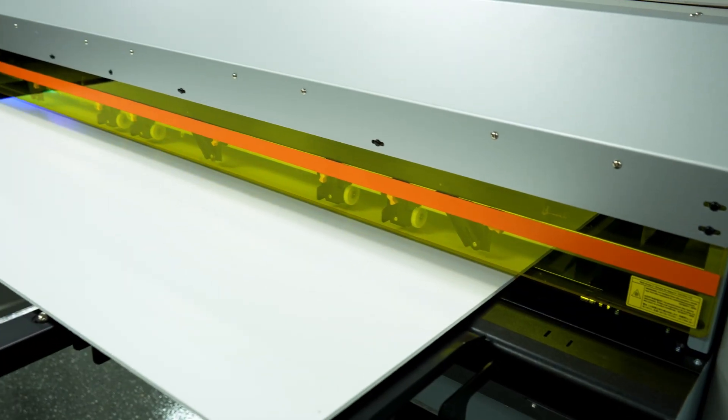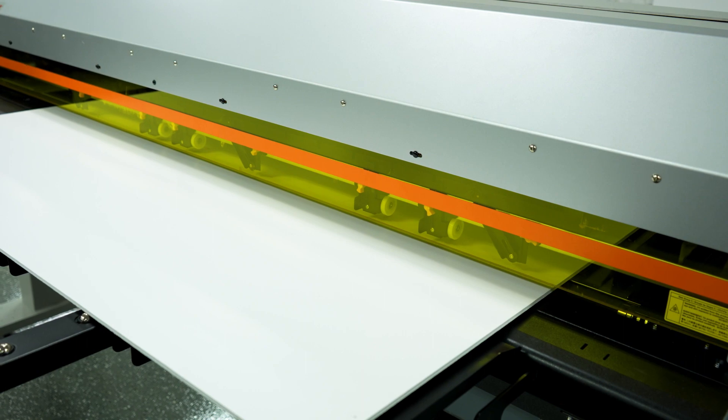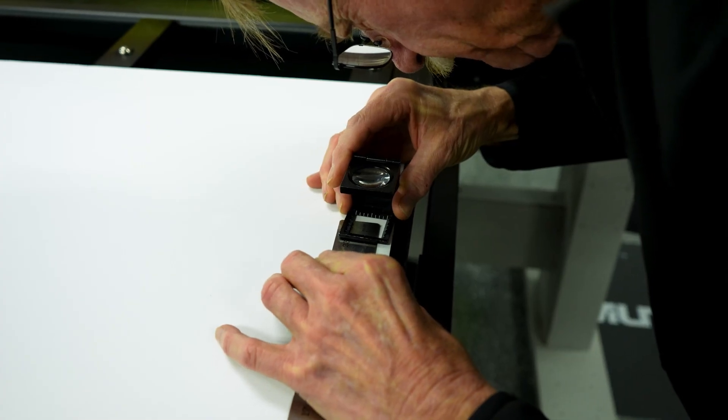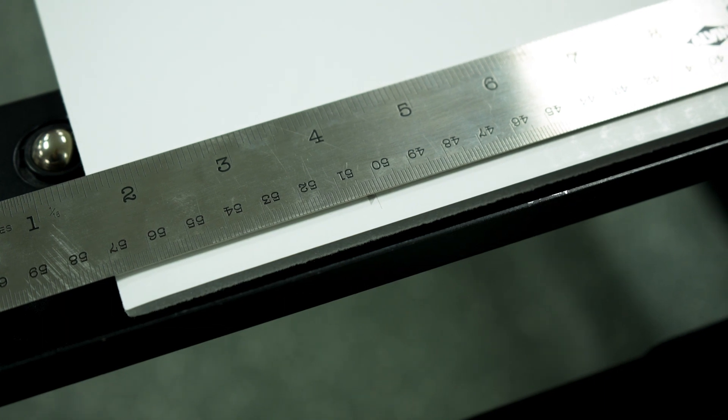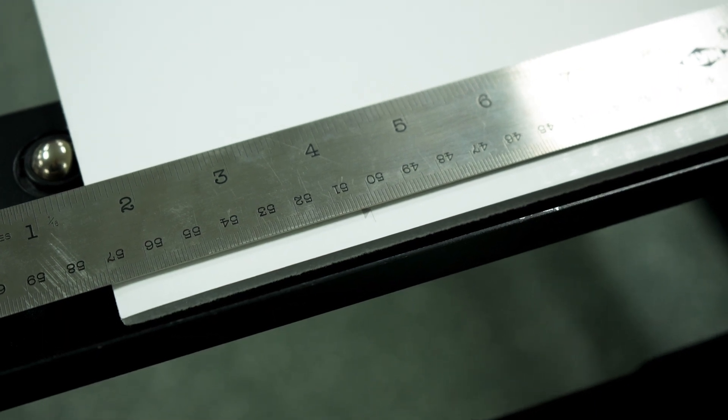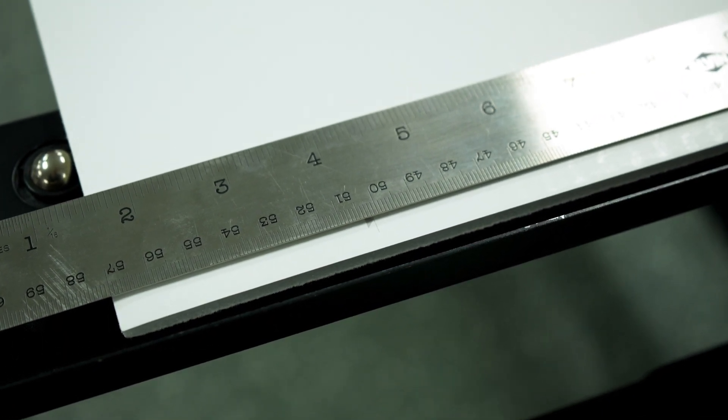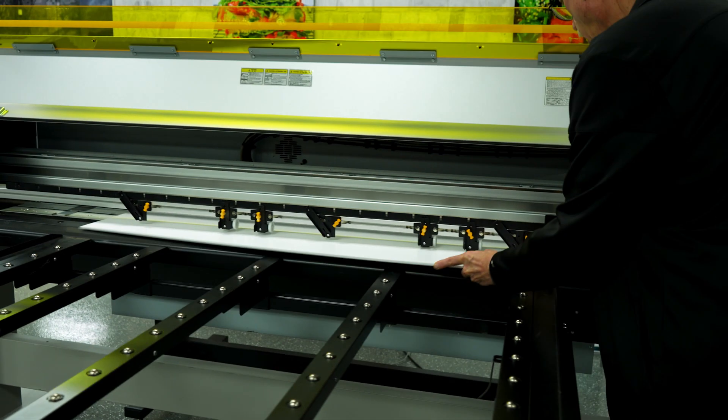Once the print is done, it's time to measure between the marks. If you find the marks differ by more than 1 millimeter from side to side, reload the media ensuring it's straighter this time. If they're within 1 millimeter, simply calculate the average and input that figure. Reload the media.